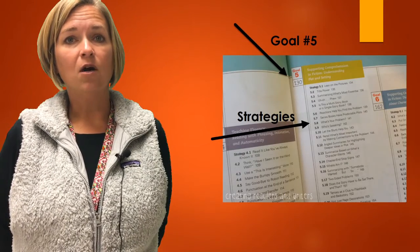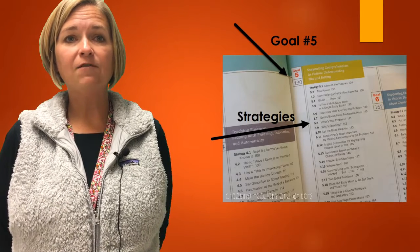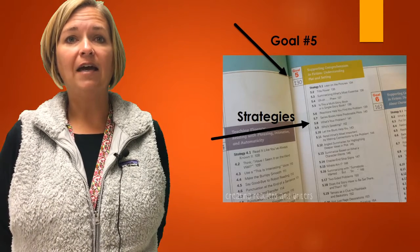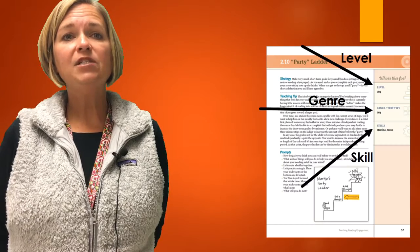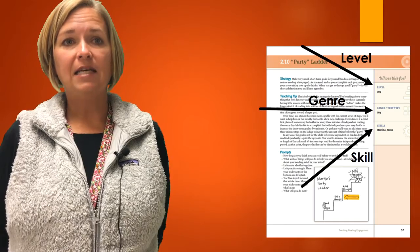The book is divided into 14 goals. Each of the 14 goals has at least 15 different strategies for teaching that goal. Each separate strategy is labeled with the reading level, genre, and skill.